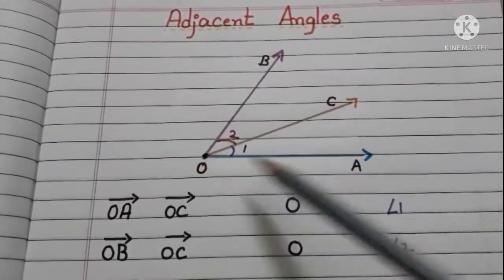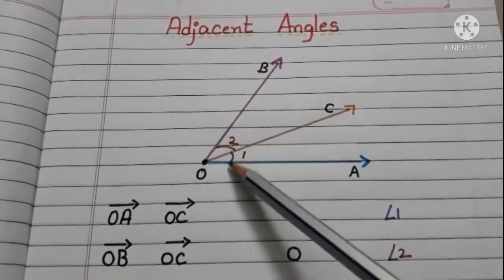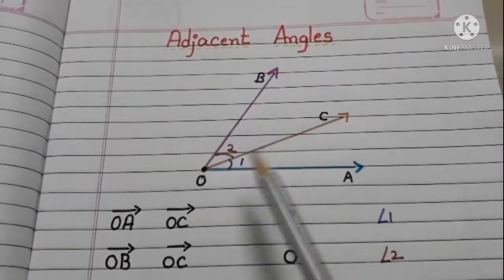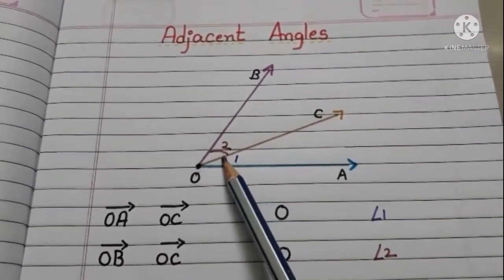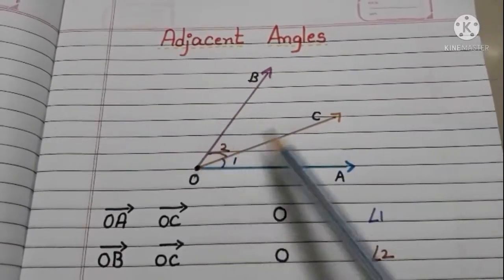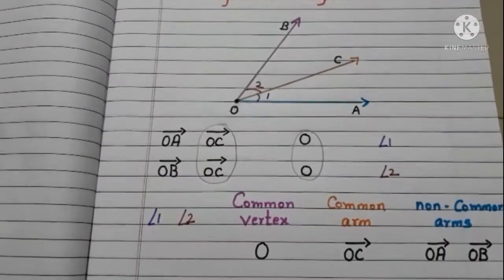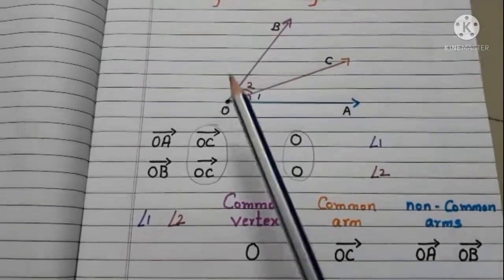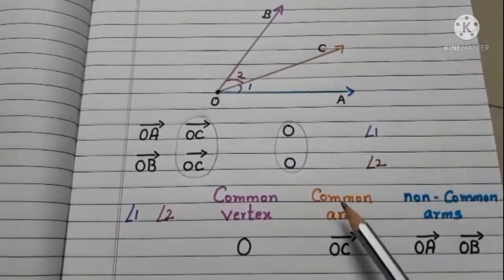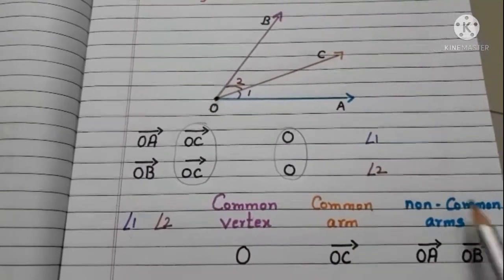Here, in this figure, OA, OB and OC are rays. 1 and 2 are angles. The rays OA and OC met at the vertex O and angle 1 is formed. The rays OB and OC met at the vertex O and angle 2 is formed. From this, we can say that for angle 1 and angle 2, O is the common vertex, OC is the common arm, and OA, OB are non-common arms.